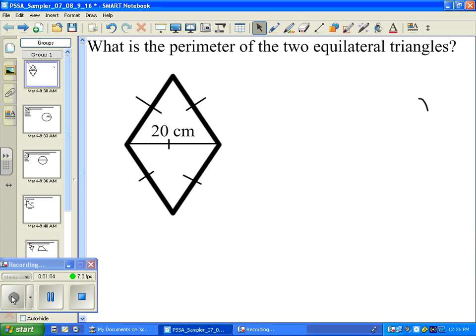Okay, so we're on the same page here. We know that these are, we're given that these are two equilateral triangles. Equilateral triangles have all their sides equal. And what they're asking is for the perimeter of these two equilateral triangles.